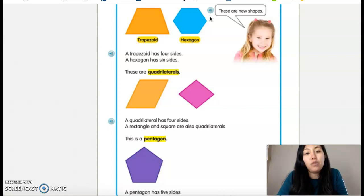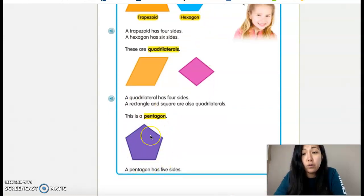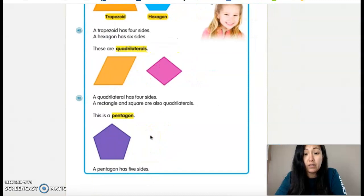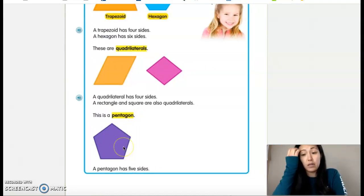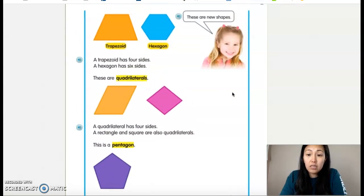We will also be focusing on quadrilaterals which have four sides. So another name for a square is a quadrilateral. Excellent job. And then finally we will be focusing on pentagons too. And I like to remember pentagon as like home base for baseball or softball. So this is the next chapter and lesson we'll be focusing on.